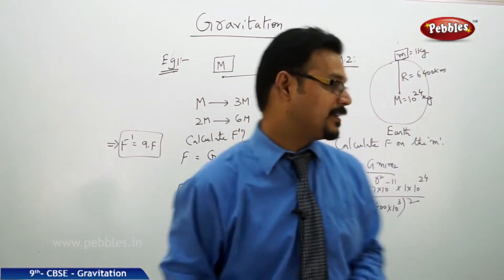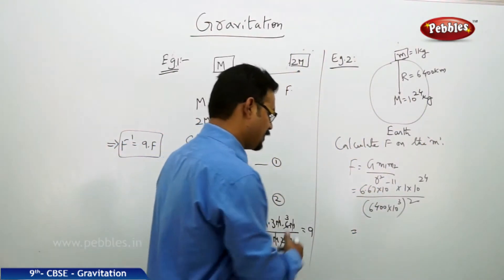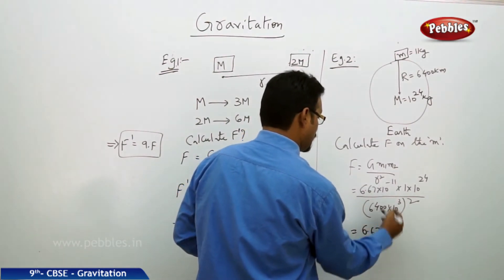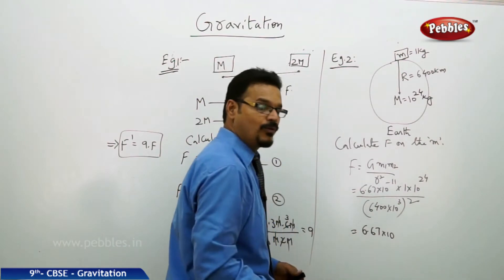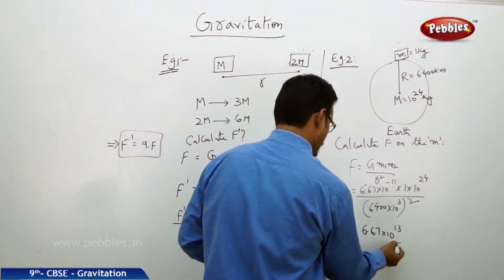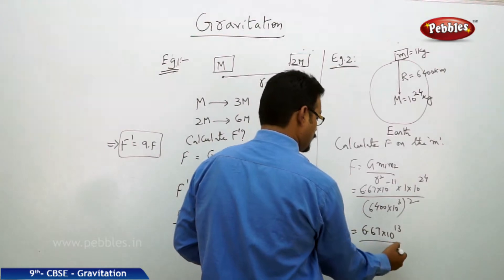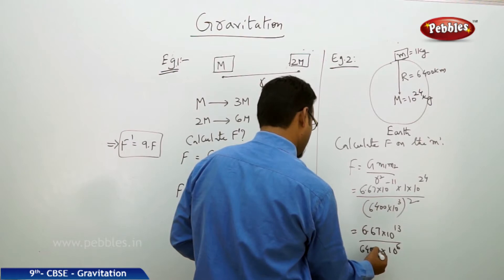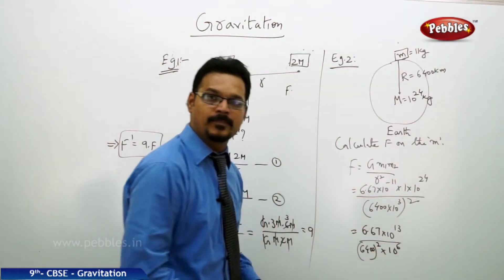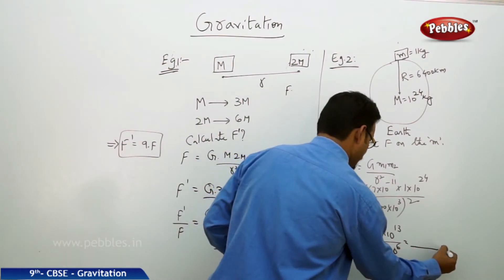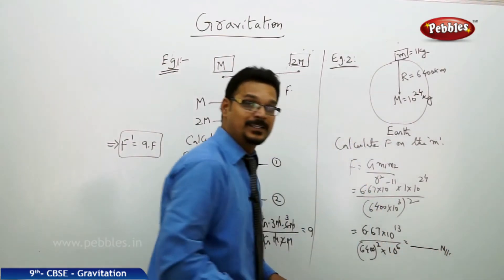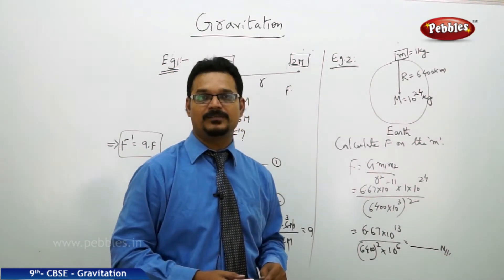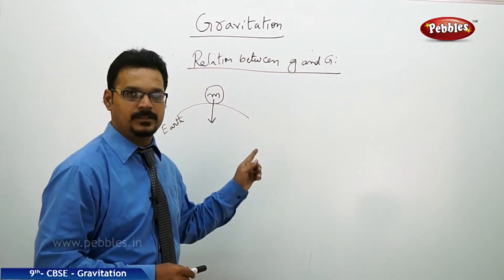Mass m1 is 1 kg, mass m2 is 6 into 10 to the 24 kg, by the radius 6400 kilometers, kilo means 10 cube whole square. Now you need to simplify this whole ratio. Let me give some help to simplify: 6.67 into 10 power minus 11 into 6 into 10 to the 24 by 10 cube into 2, 10 power 6, into 6400 square. Now if you fully simplify it you will get the answer. I am not telling the answer to you, you solve it and find the answer for this example numerical.